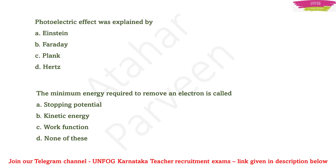We can also answer questions like this. For example: Photoelectric effect was explained by — Einstein, Faraday, Planck, or Hertz? The answer is Einstein. And another question related to the photoelectric effect: The minimum energy required to remove an electron is called — the answer is, of course, the work function.